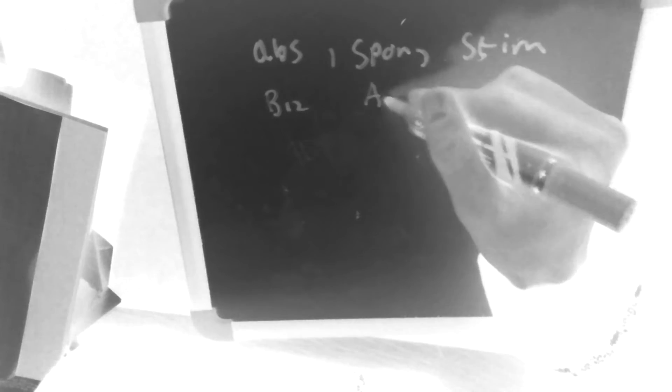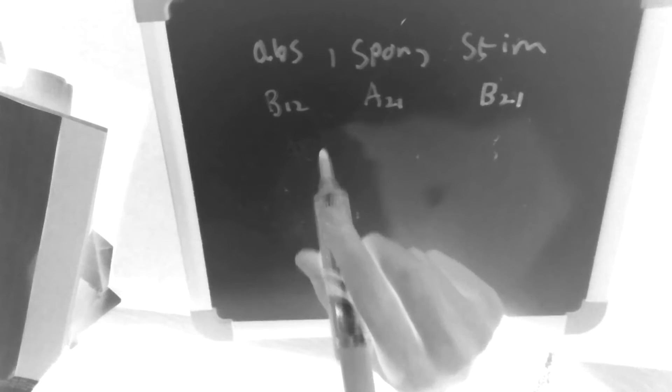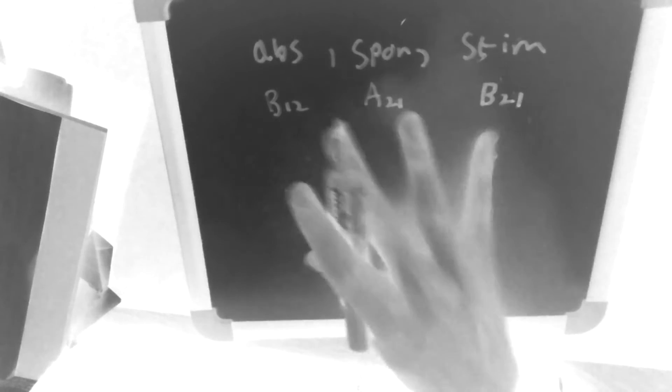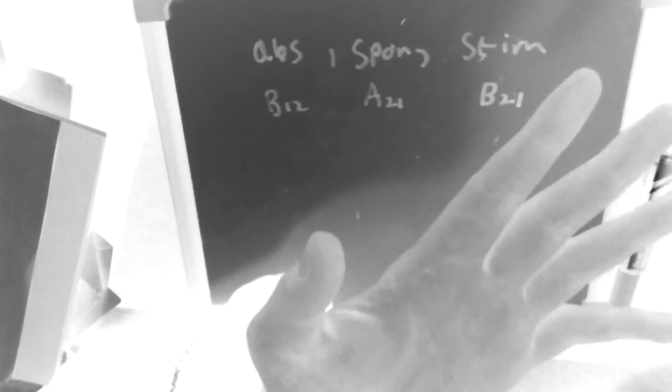Well, we quantify them by something we call the Einstein coefficients. And we give absorption the Einstein coefficient B12, spontaneous emission the Einstein coefficient A21, and stimulated emission the Einstein coefficient B21. So the first number here is the state the atom or electron moves from, and the second number is the one it moves to. The B's here kind of tell you that those are the ones that are to do with an external electromagnetic field.